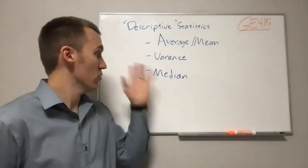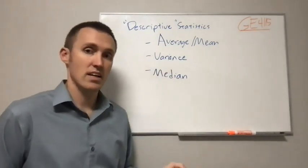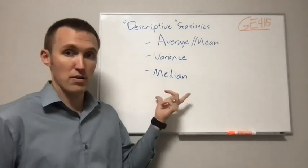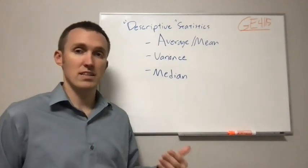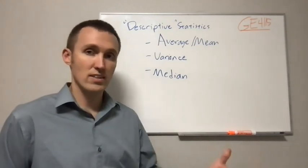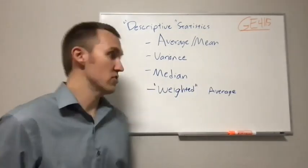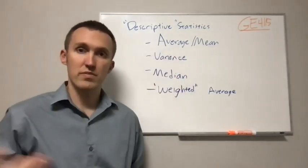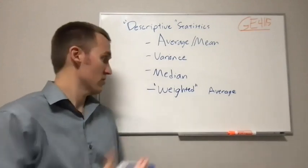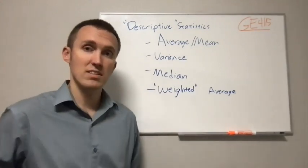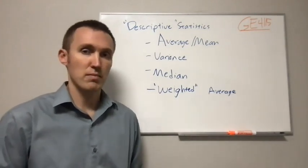We've also talked about the variance, a measure of dispersion or spread in data, and the median as one type of a robust statistic — robust in the sense that if there are outliers in data, it's less sensitive to those. The weighted average is still a measure of central tendency of a data set, but the weighting means we're somehow weighting the different measurements in different ways than we would normally think about doing.